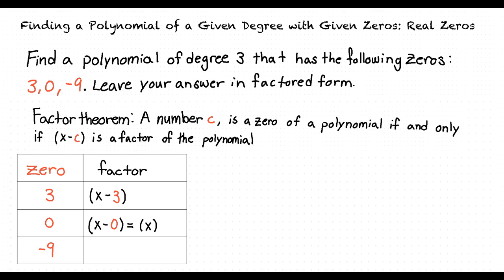Finally, using the zero of negative 9, we find that the corresponding factor is x minus negative 9, or x plus 9.